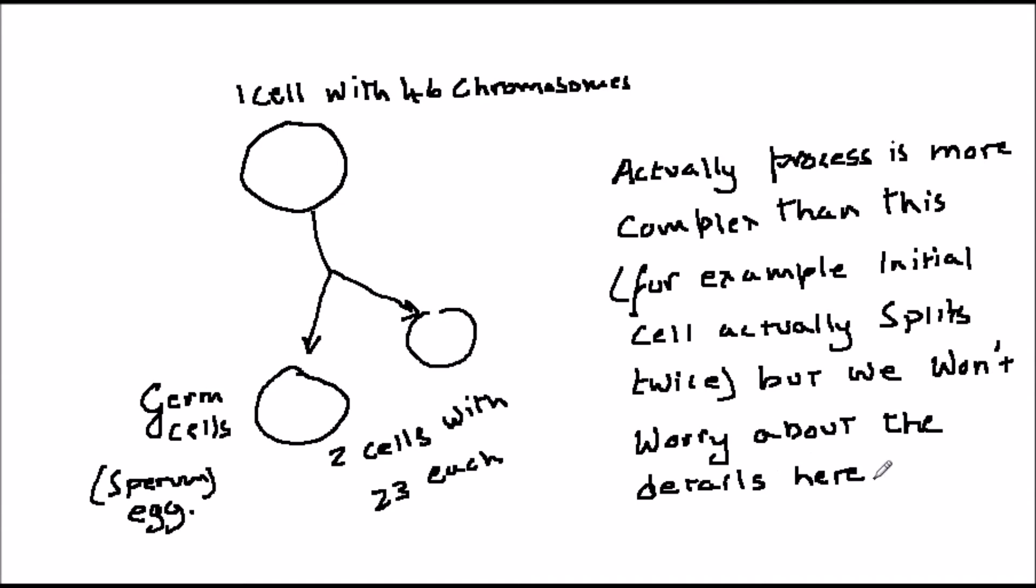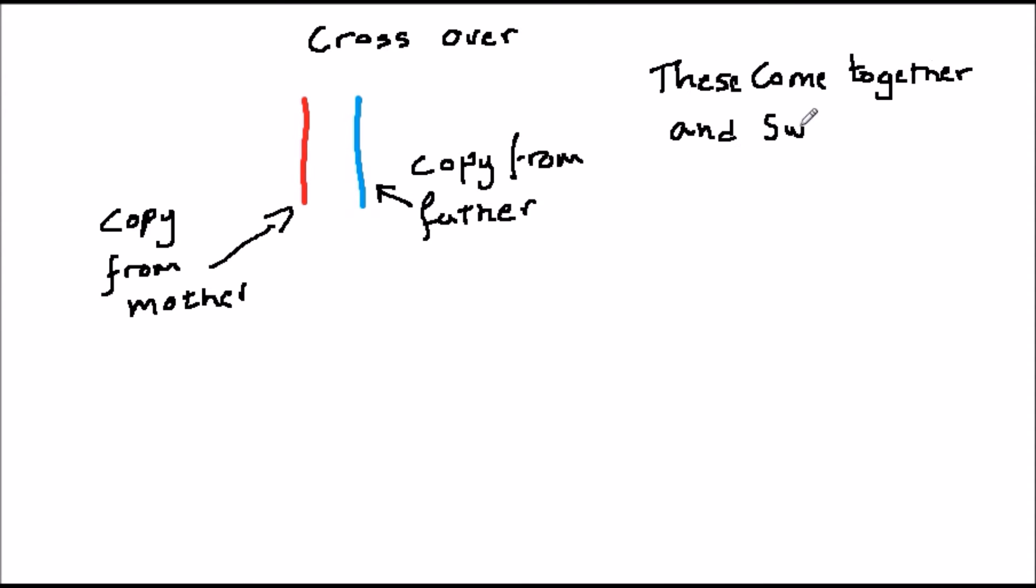In meiosis, the chromosomes come together in pairs and mix up each other's genes. This process is called recombination or crossover, and it is random. It results in two mixed up chromosomes.